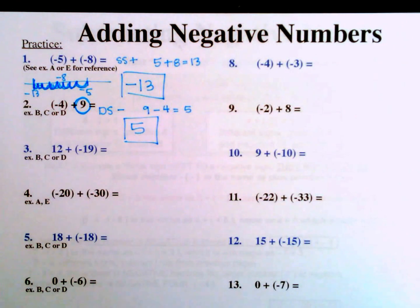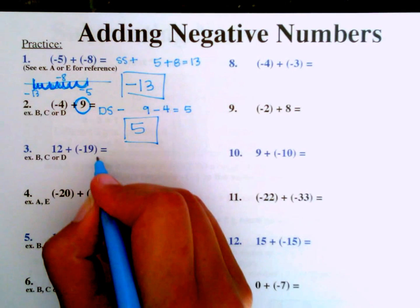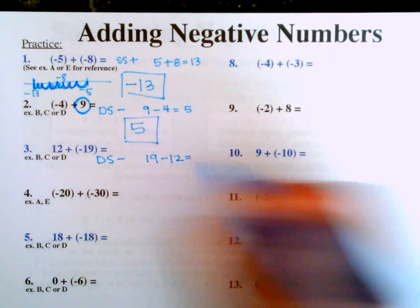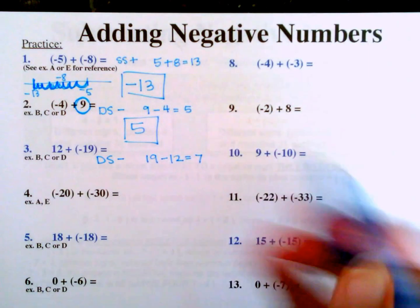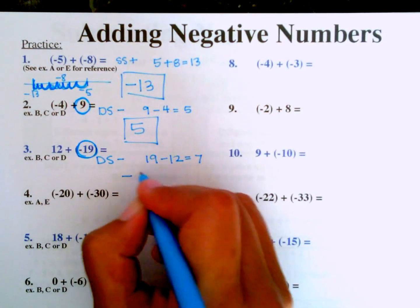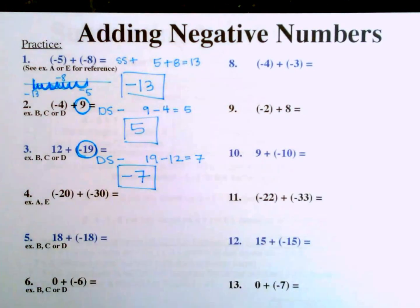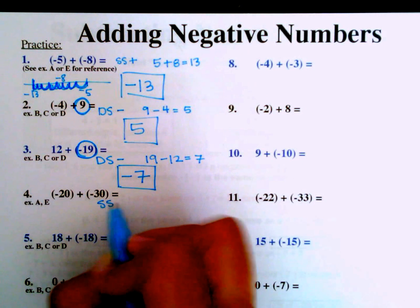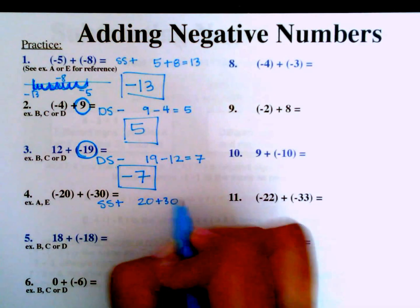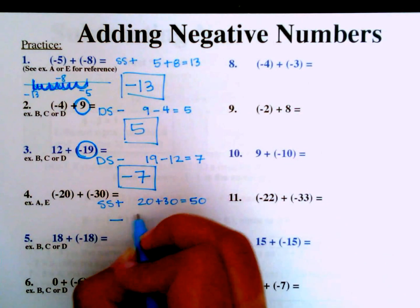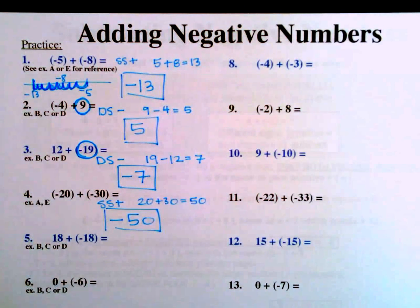Number 3: 12 plus negative 19. Different signs, so we subtract: 19 minus 12 equals 7. The larger number, 19, is negative, so the answer is negative 7. Number 4: negative 20 plus negative 30. Same sign, so we add: 20 plus 30 equals 50. Adding two negatives makes a larger negative, so the answer is negative 50.